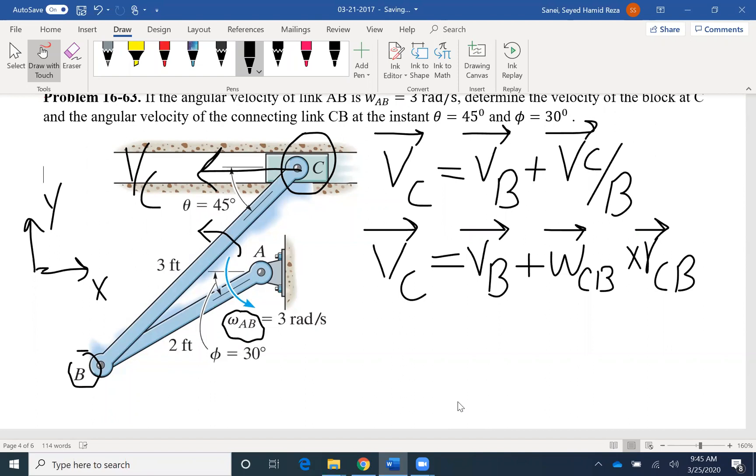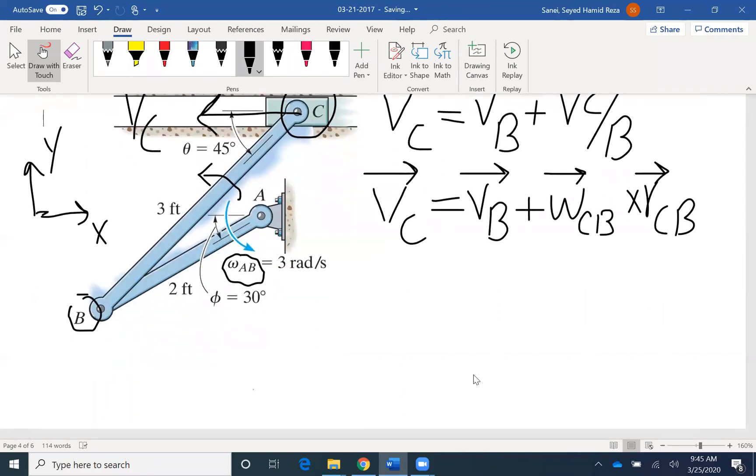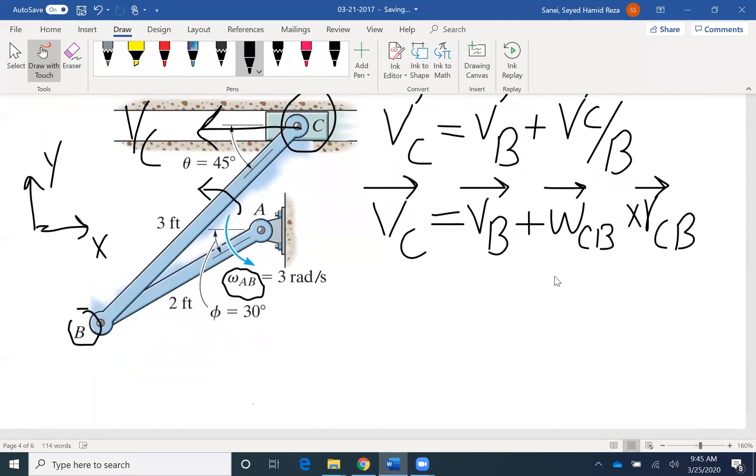If you assume the opposite of what I assumed, you're going to get a negative value, and then you know the direction you assume is incorrect. Even if your visual inspection is incorrect, the final answer will be correct. But it's easier to just look at the problem and try to figure out where each link is moving. We have VC, VB, omega CB, and RCB. We have four vectors that we need to find in Cartesian form so we can solve the problem.